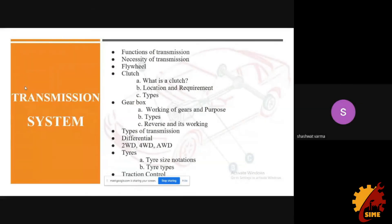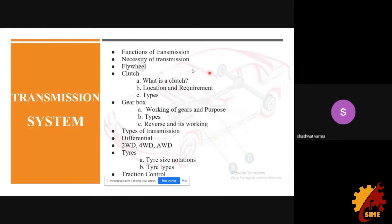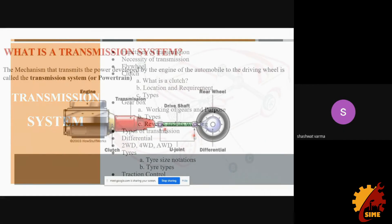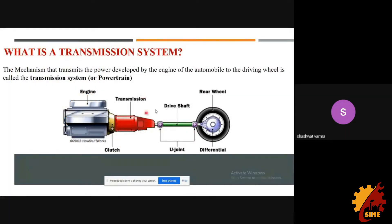Now moving into the transmission session. Topics we will cover include the functions and necessity of transmission, flywheel, clutch, gearbox, types of transmission, differential, drivetrain layouts, tire and traction control. The primary function of transmission is torque multiplication — for example, when climbing a slope you need additional torque.